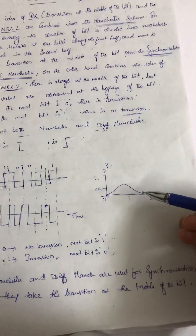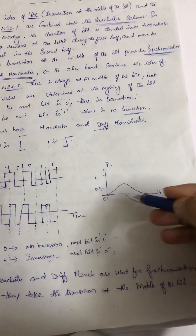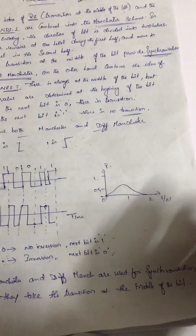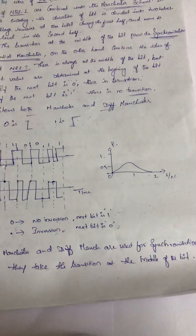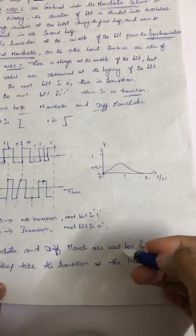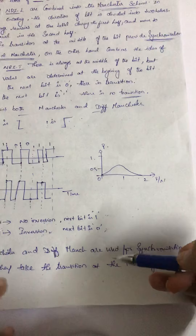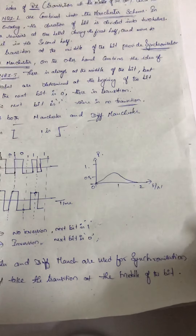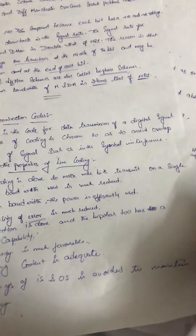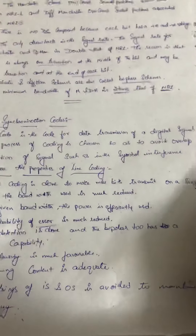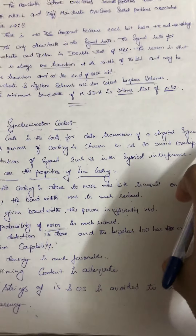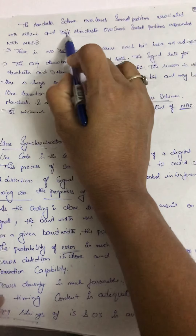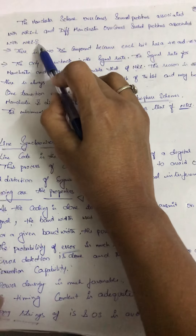I have drawn the bandwidth and amplitude also. This is our bandwidth and this is our amplitude — this is the waveform. The synchronization process takes place because there is always a transition at the middle of the bit — that is why we get synchronization. The Manchester scheme overcomes several problems associated with NRZL, and the Differential Manchester scheme is associated with NRZ inversion.